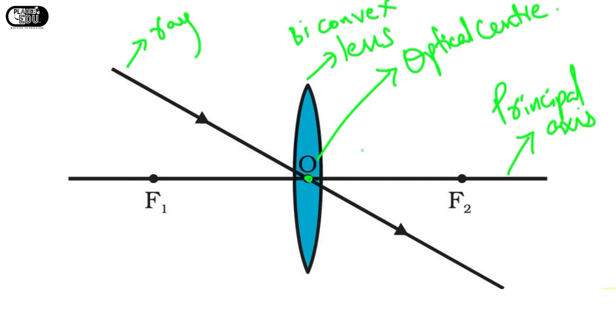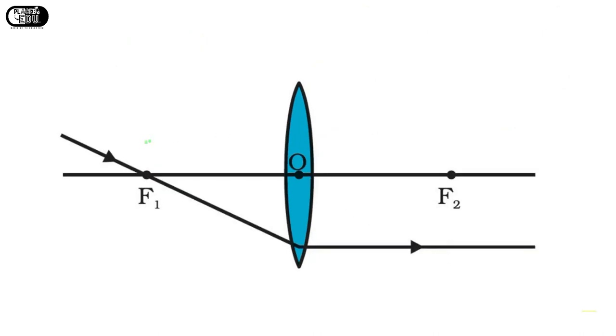The second point is whenever the light ray is passing to the focal point F1, then it will be refracted such that it will be parallel to the principal axis. Okay, I already said that this is the principal axis.